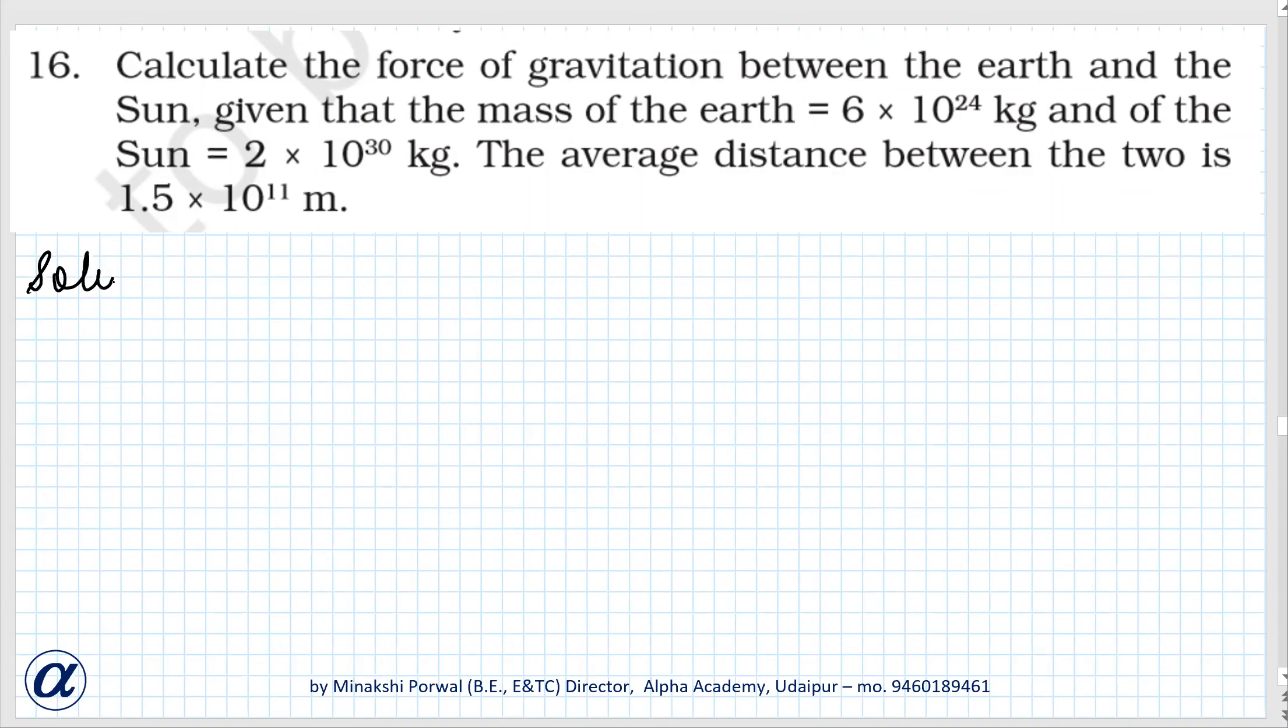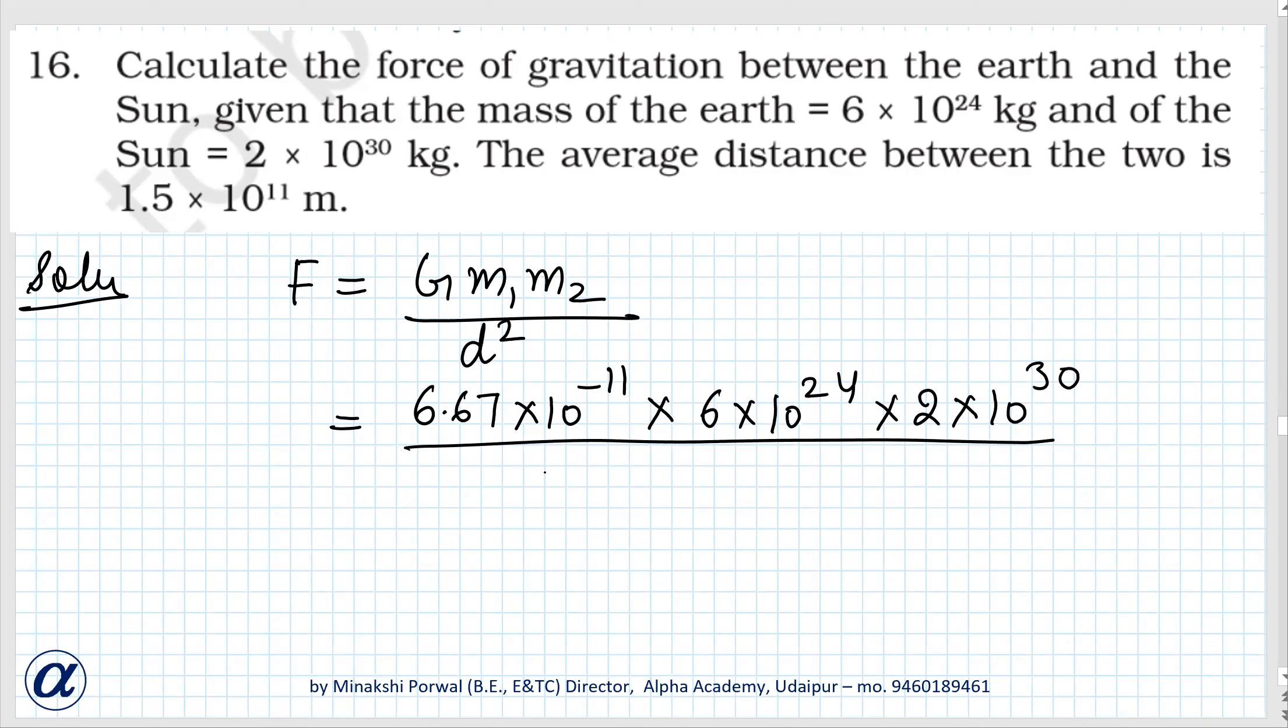So we have to find the force of gravitation between earth and sun. F = G m₁ m₂ / d², where d is distance between them. Value of G is 6.67 × 10⁻¹¹. Mass of earth is 6 × 10²⁴, mass of sun is 2 × 10³⁰, and distance between them is 1.5 × 10¹¹ whole square.